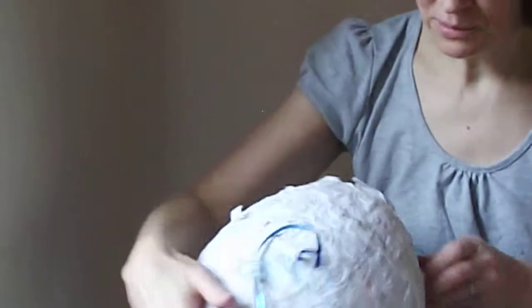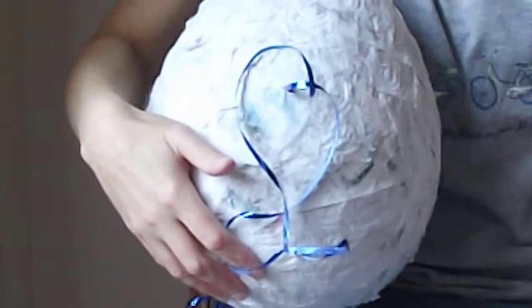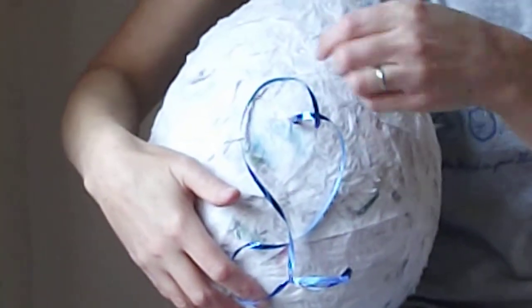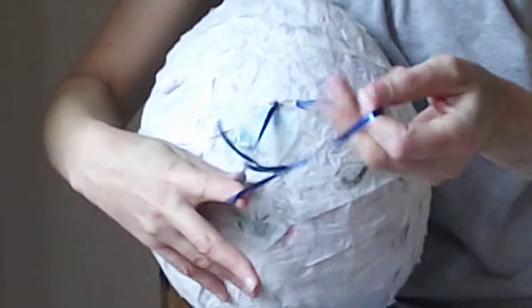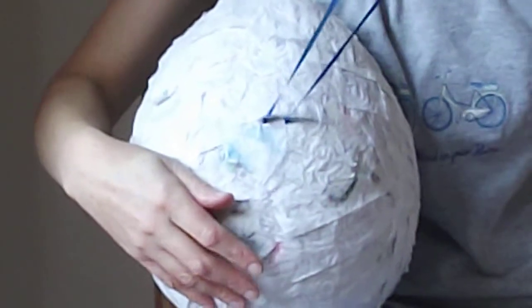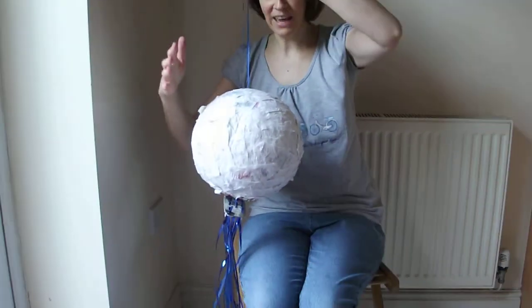The first thing you need to do is, using a pair of scissors, the tip of a pair of scissors, punch a hole in the top and thread through a ribbon or a piece of string so that you're able to hang the pinata during the game.